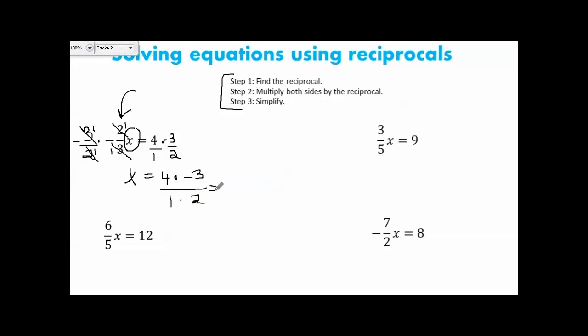So now we multiply: 4 times negative 3 is negative 12, and 1 times 2 is 2. This simplifies down to negative 6.